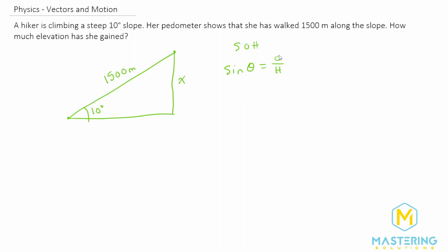But we want to solve for the opposite. We'll multiply both sides of the equation by the hypotenuse to isolate the opposite.